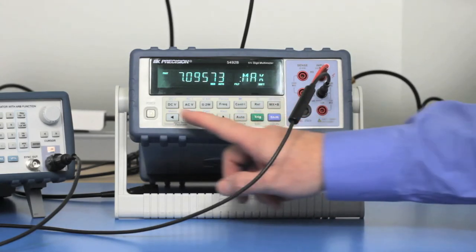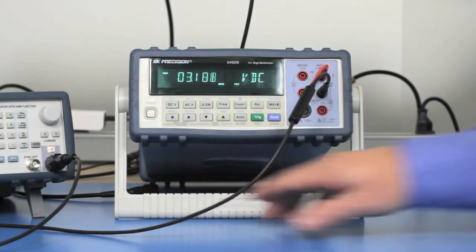To exit this, we do Shift and left arrow, and we're back to doing our normal measurements. So now the data stored into the buffer is in volatile memory, so if you were to power cycle the 5492B, you will lose all of that data, so please remember that.